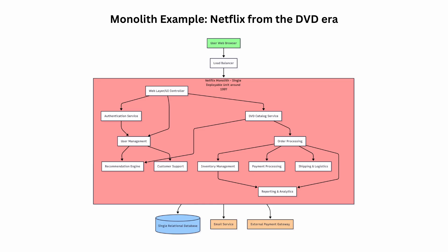This diagram shows Netflix's original monolithic application from their DVD-by-mail era, which lasted from 1997 to the late 2000s. Everything lived in one massive application — user authentication, order processing, payment handling — all tightly coupled together. When users rented DVDs, all requests flowed through this single system connected to one shared database. While simpler to develop and deploy initially, this architecture became challenging to scale as Netflix grew. Every small change required redeploying the entire application, and if one component failed, it could bring down the whole system.